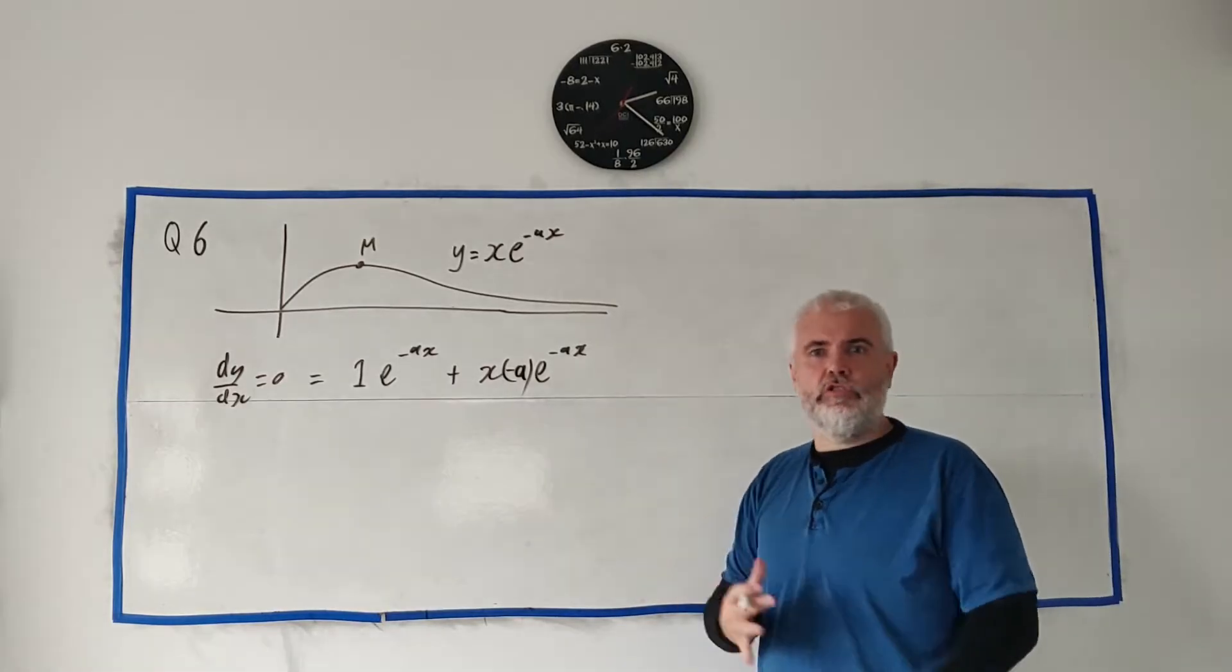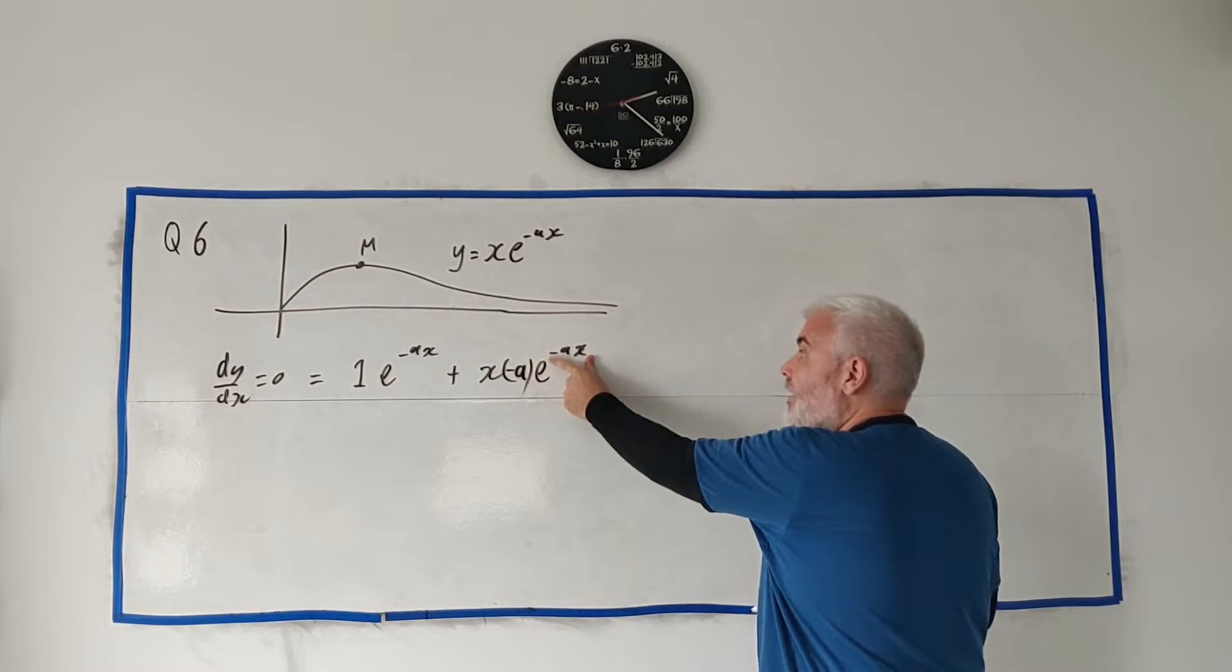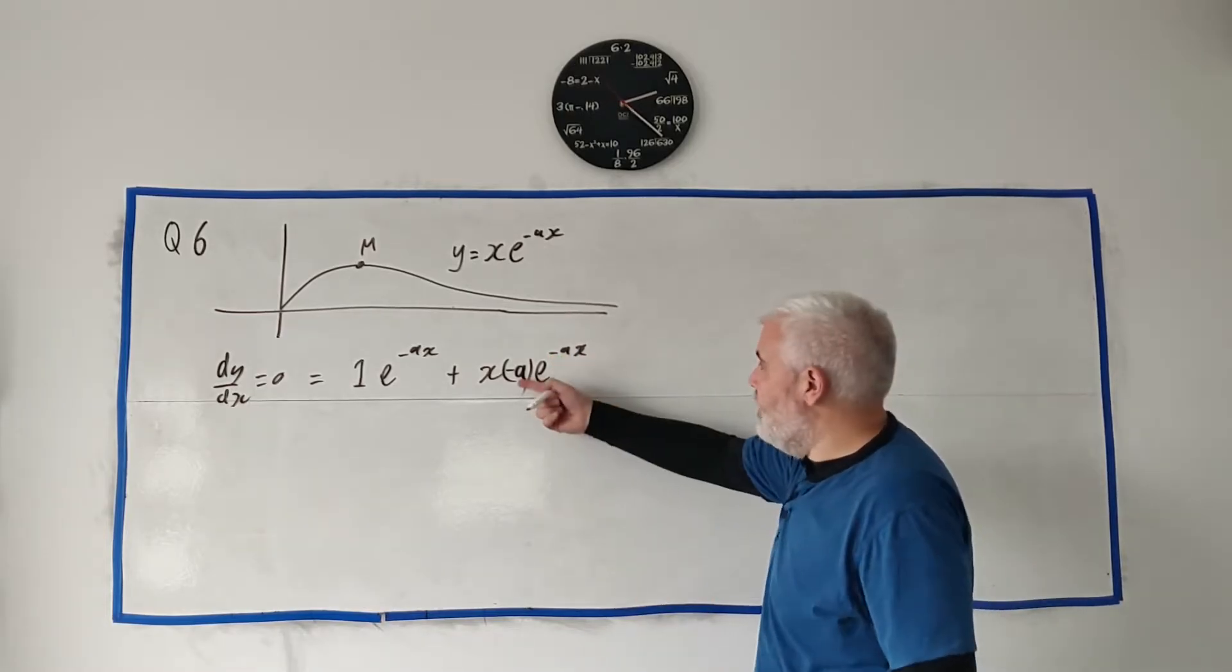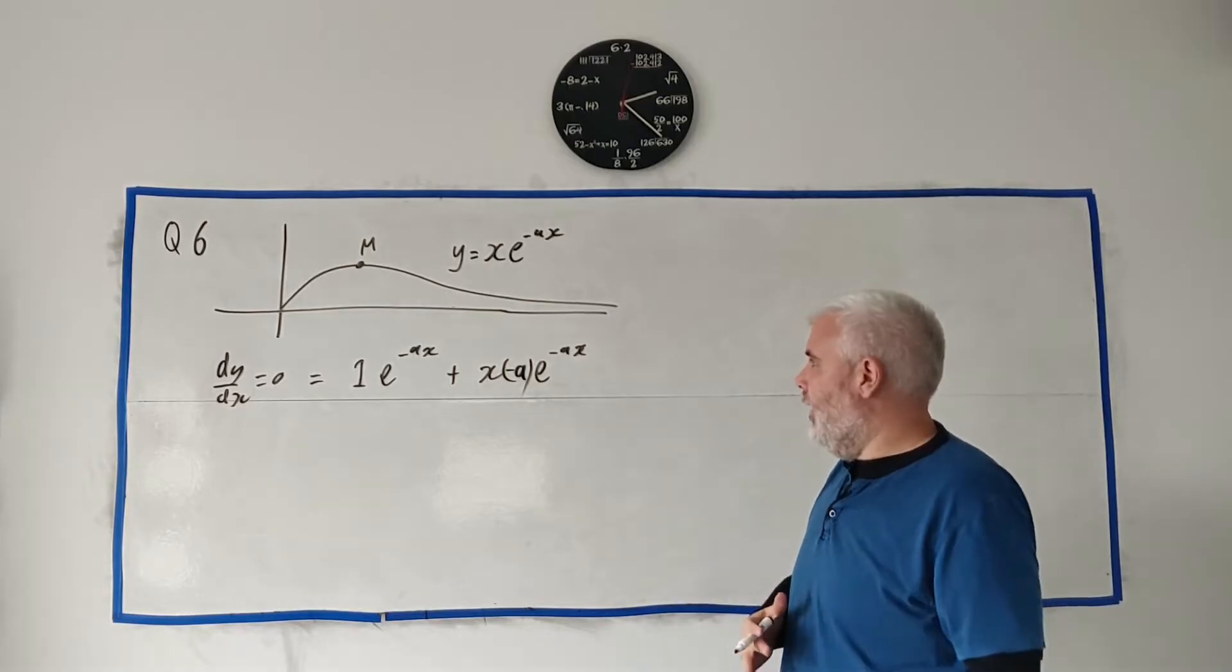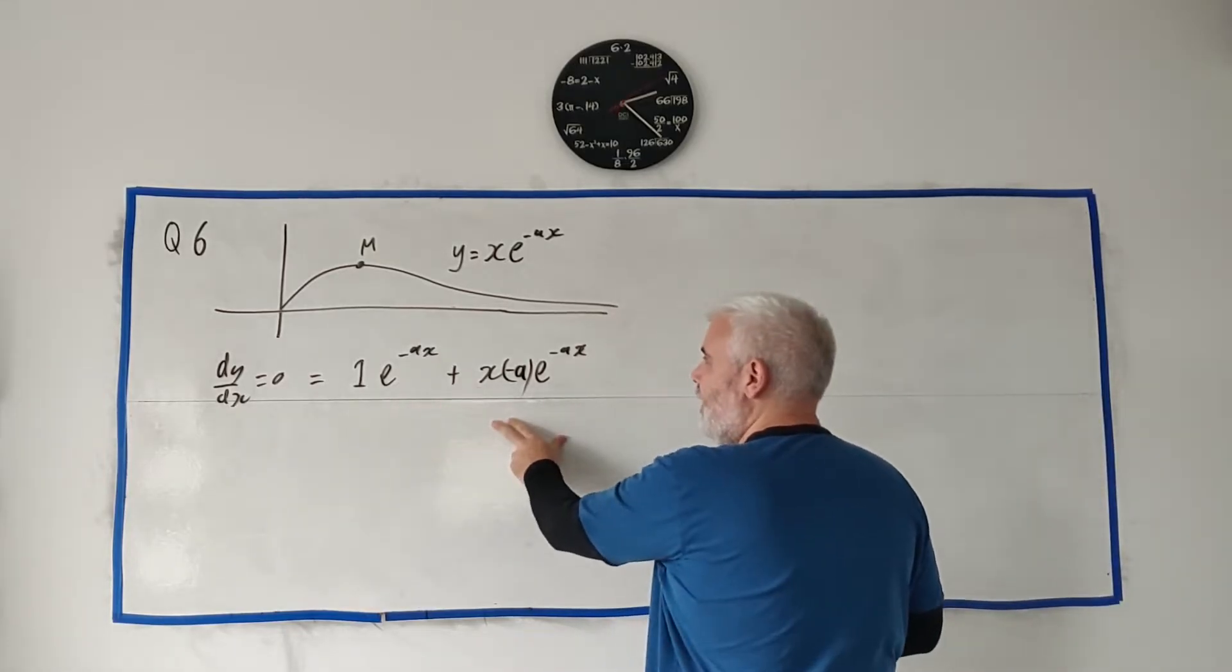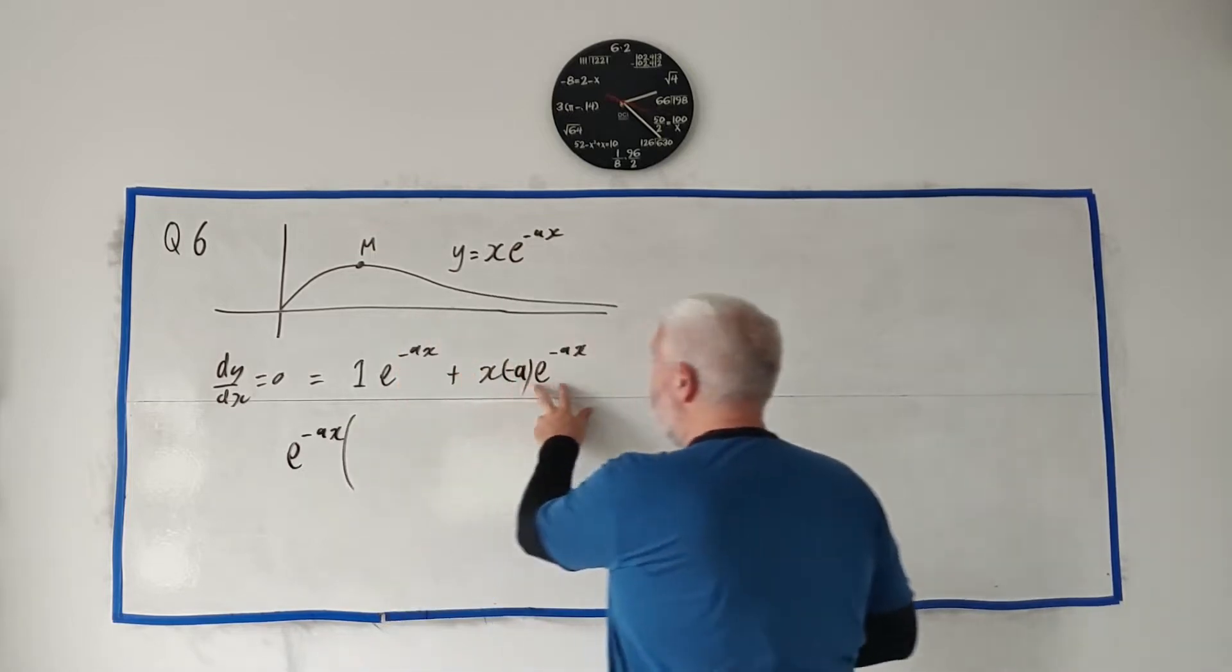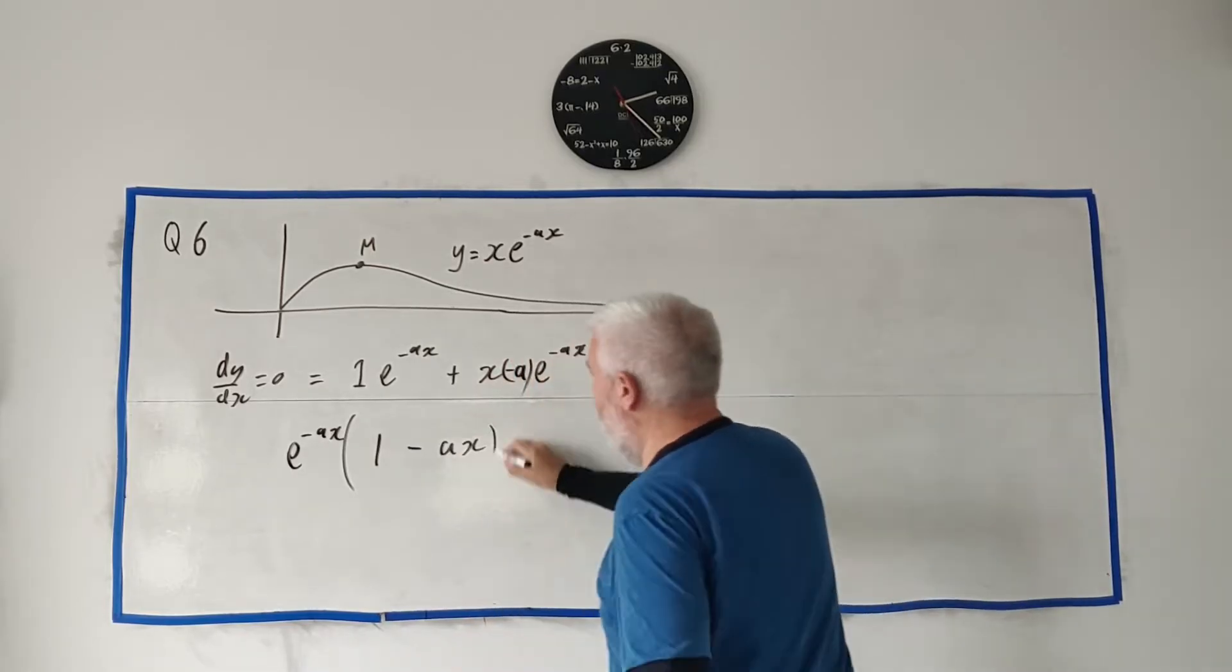The chain rule means we'll have to differentiate up here and multiply. So the derivative of minus ax is minus A, so we multiply this by minus A. Later in this question, we're going to use substitution in integration as well. The chain rule works the same - we pretend this is simple, just an x. In integration, it'll divide. Differentiation, it multiplies.